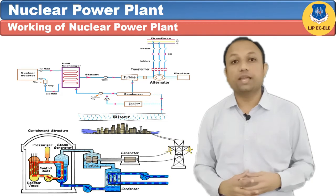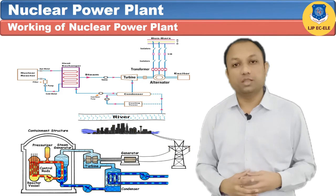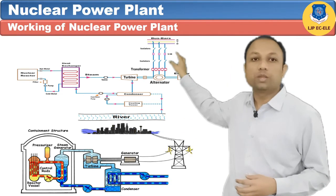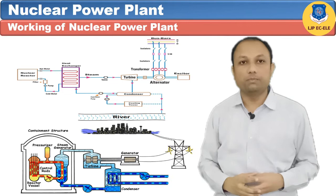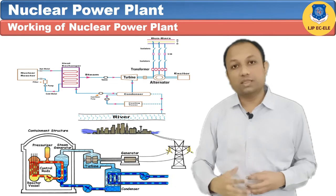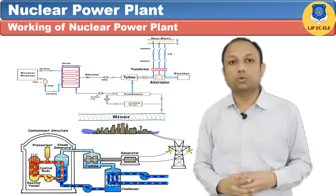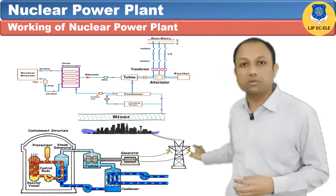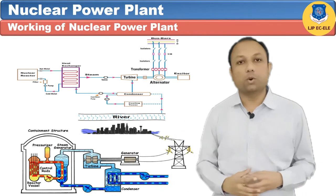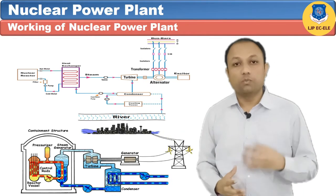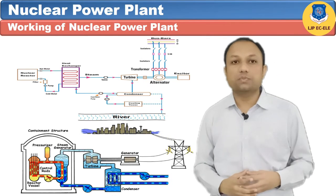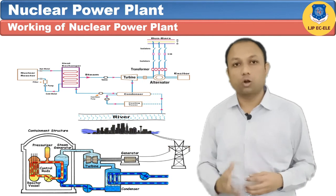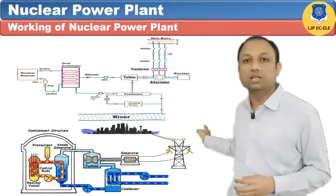Make-up water is taken either from the river or from the well, and after making it clean in the water treatment plant, it is sent to the heat exchanger by the feed pump. Water necessary for cooling in the condenser is taken from the river or well with the help of a pump.